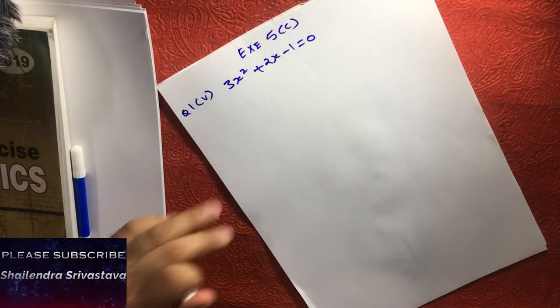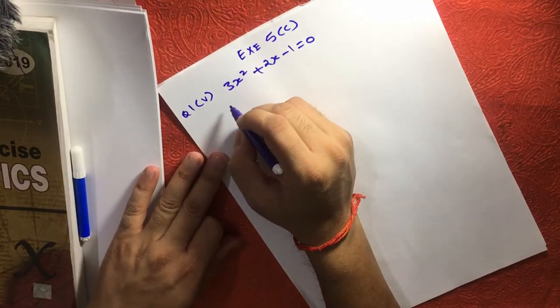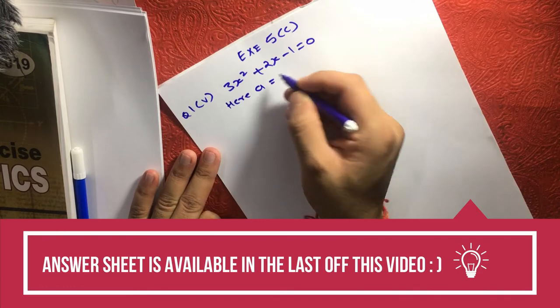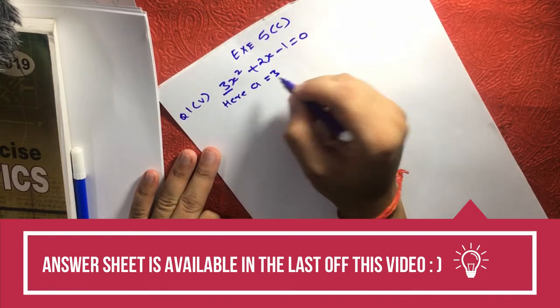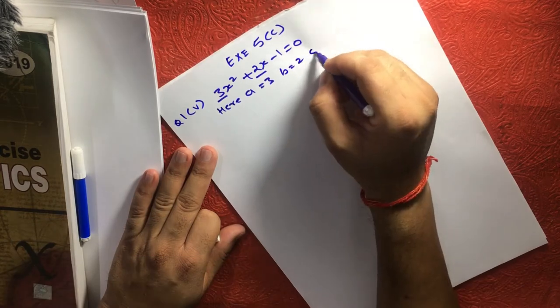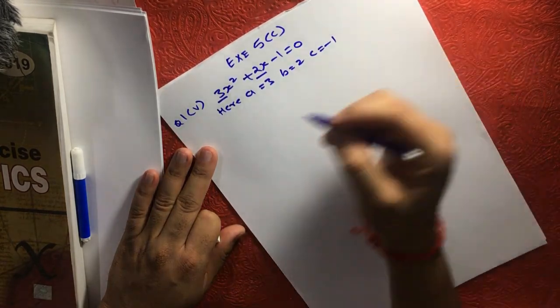Now, again here we can see the numeric part first. The numeric part is A is equal to 3, B is 2, and C is minus 1.